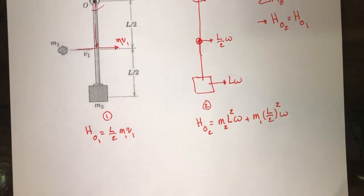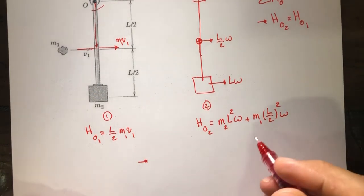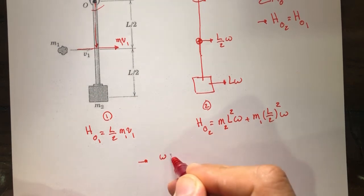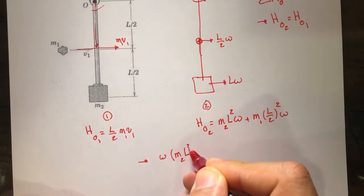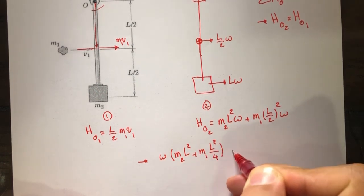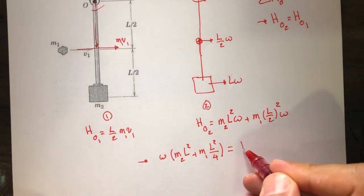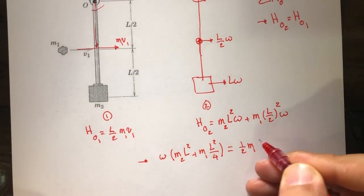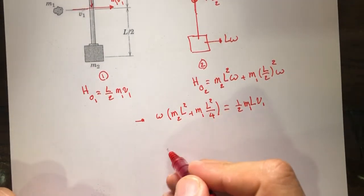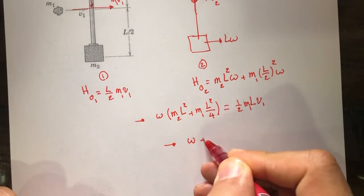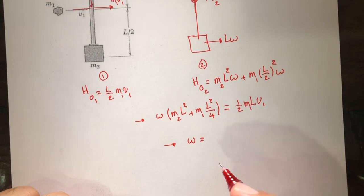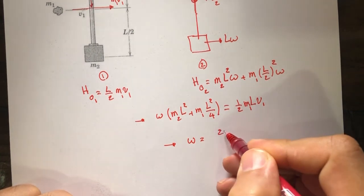These two must be equal to each other. So H_O2 = omega·(M2·L² + M1·L²/4) = H_O1 = (1/2)·M1·L·v1. Solving for omega, one of the L's cancels out, giving omega = 2·M1 / (M1 + 4·M2) · v1/L.